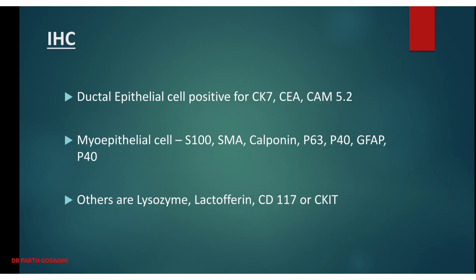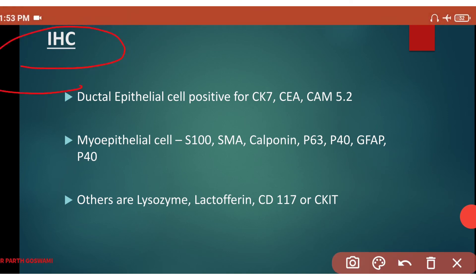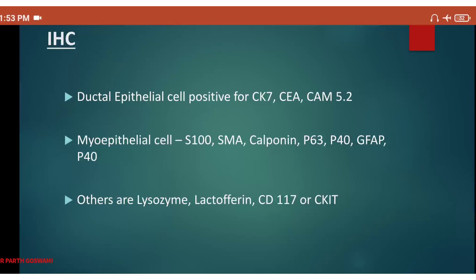On immunohistochemistry, ductal epithelial cells are positive for CK7, carcinoembryonic antigen, and CAM5.2. Myoepithelial cells are positive for S100, smooth muscle actin, calponin, p63, p40, and GFAP. Other positive IHC markers include lysozyme, lactoferrin, CD117, and SOX10. When morphological diagnosis is difficult, IHC can be performed, and if doubt persists, molecular testing can be done.